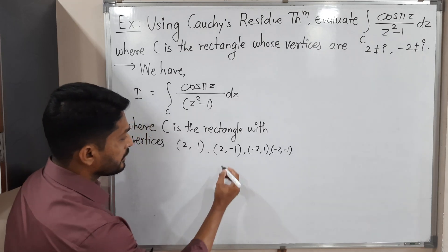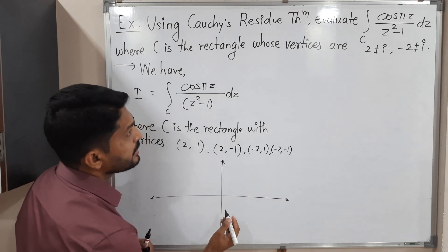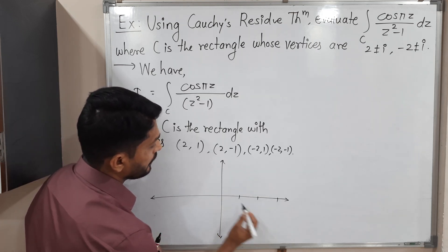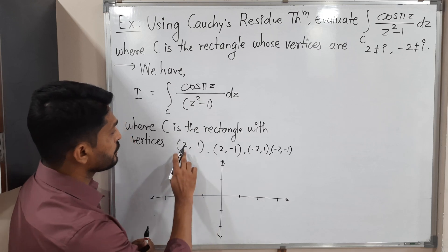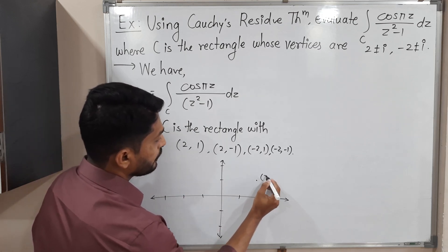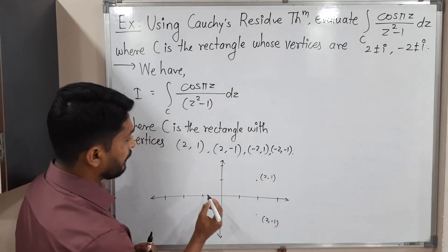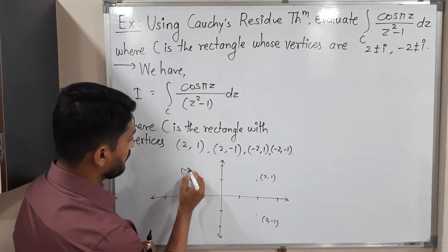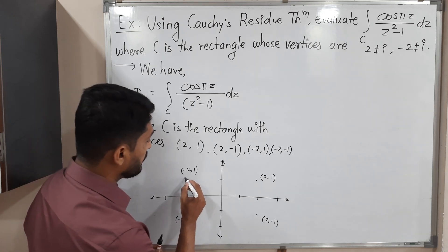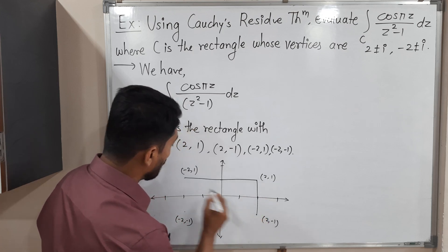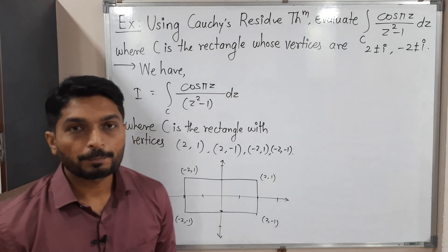So we have the vertices of the given rectangle. Let us draw the rectangle — this is the imaginary axis and this is the real axis. The four vertices are: (2, 1), (2, -1), (-2, 1), and (-2, -1). Joining them gives us the rectangle C.